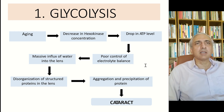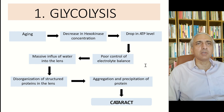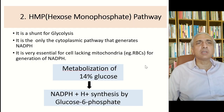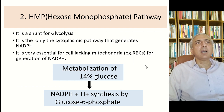In glycolysis — the pathway through which cells get energy — with aging there is a decrease in hexokinase concentration, a drop in ATP levels, and poor control of electrolyte balance. This leads to massive influx of water into the lens, disorganization of structural proteins, and aggregation and precipitation of proteins, leading to cataract formation.